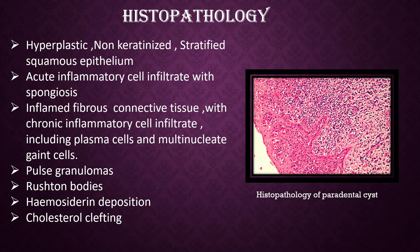Histopathological Features. Hyperplastic, non-keratinized stratified squamous epithelium. Acute inflammatory cell infiltrate with spongiosis. Inflamed fibrous connective tissue with chronic inflammatory cell infiltrate including plasma cells and multinucleate giant cells. Other associated features may include pulse granulomas, Rushton bodies, hemosiderin deposition, and cholesterol clefting.